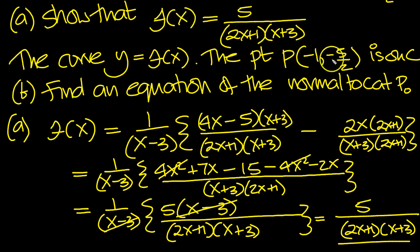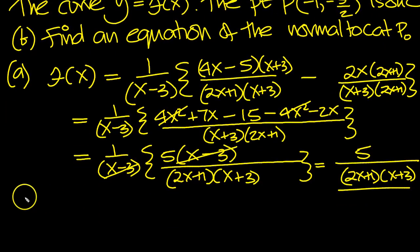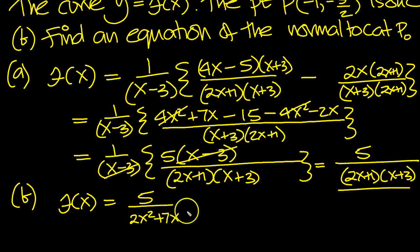So the curve, the point P, is on C. Find an equation of the normal to C at P. So we've got minus 1 minus 5 over 2. We want the equation of the normal. Well, the gradient is f dashed. Now to differentiate, the best thing to do here is just expand this bracket. So here f of x is equal to 5 over 2x squared plus 7x plus 3. So this is easy to differentiate in this form.